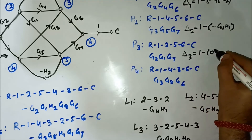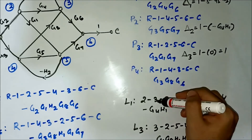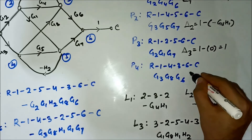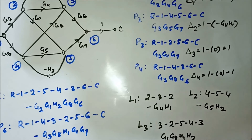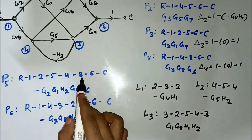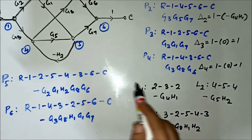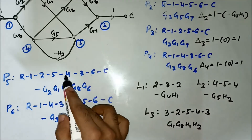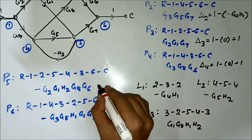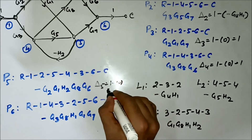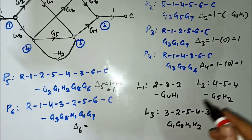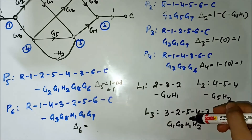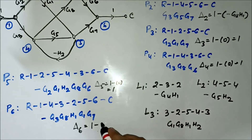For P4 (R, 1, 4, 3, 6, C): node 3 is in L1 so it touches L1; node 4 is in L2 so it touches L2; node 4 is in L3 so it touches L3. P4 touches all loops, so Δ4 = 1. For P5 (R, 1, 2, 5, 4, 3, 6, C): nodes 2 and 3 touch L1, node 4 touches L2, nodes 5 and 4 touch L3. P5 touches all loops, so Δ5 = 1. For P6 (R, 1, 4, 3, 2, 5, 6, C): node 2 touches L1, node 4 touches L2, node 3 touches L3. P6 touches all loops, so Δ6 = 1.